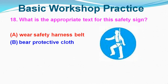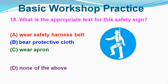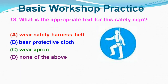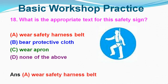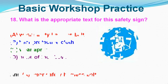Question No. 18: What is the appropriate text for this safety sign? Option A: Wear Safety Harness Belt, Option B: Wear Protective Clothes, Option C: Wear Apron, Option D: None of the Above. Correct answer is Option A, Wear Safety Harness Belt.